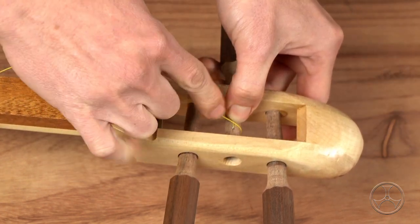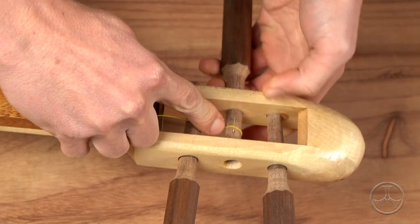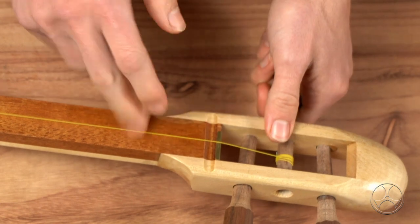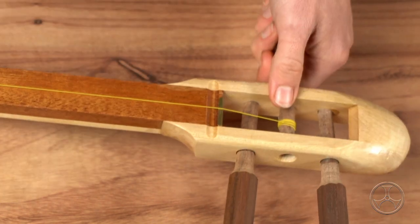Pull the string down like so, pinch it with the thumb. Then hold this down with the longer end. Then turn. Keep turning until the string gets a little taut. We'll tune it later.